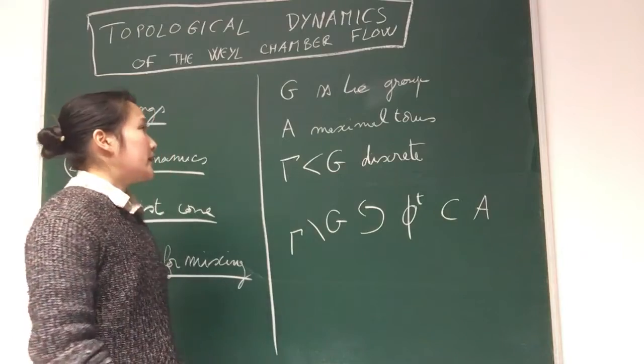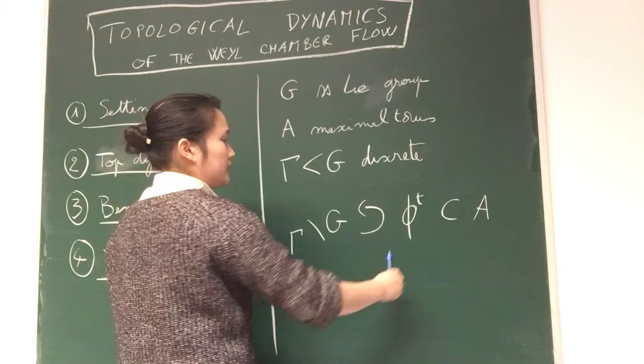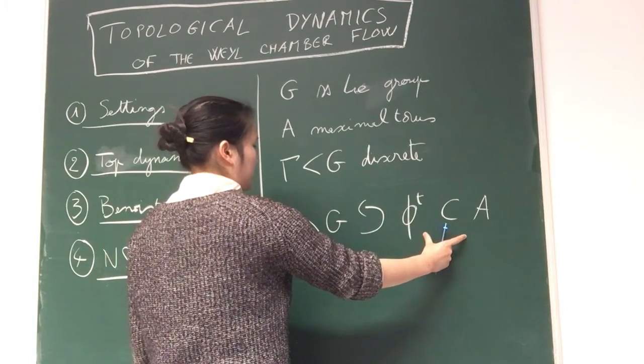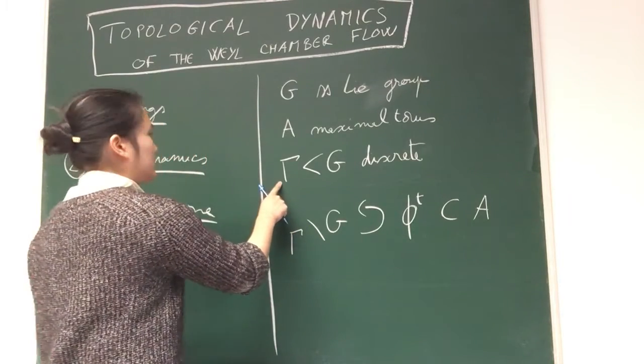Let G be a semi-simple Lie group and A be a maximum torus. I'm interested in right action of one parameter subgroup of A on G mod gamma, where gamma is a discrete subgroup of G.